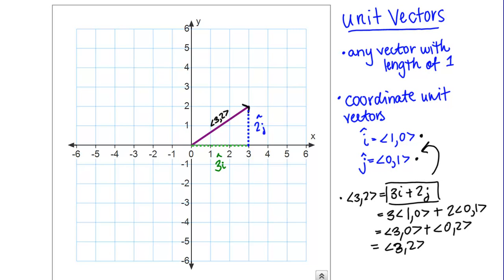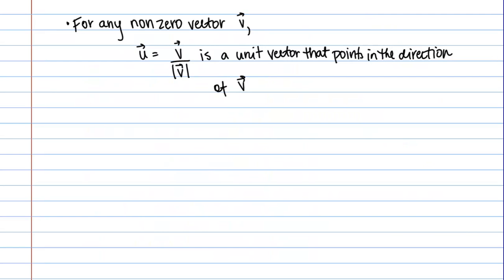That's what i and j, these coordinate unit vectors do. They give us this other helpful way to write vectors. There's something else that's important about unit vectors as well.